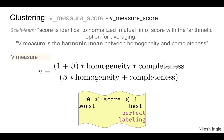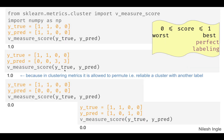Finally, the V-measure score is the harmonic mean between homogeneity and completeness, given by that relation. A score of one is the best. The implementation uses v_measure_score. As with the other metrics, cleanly separated data points yield a higher score, and overlap causes the score to drop toward zero.